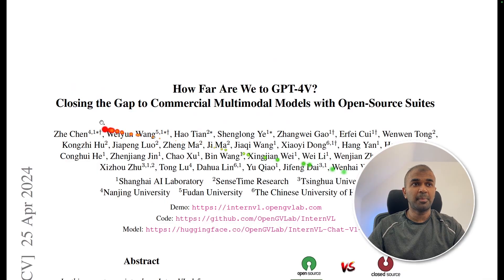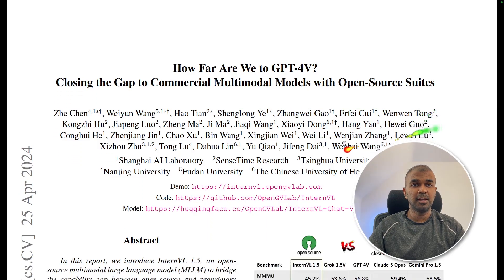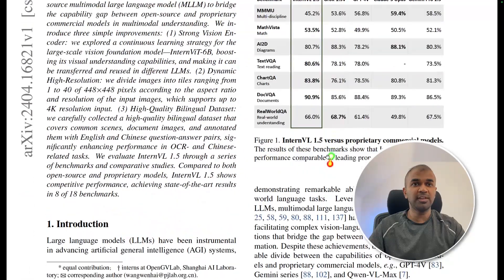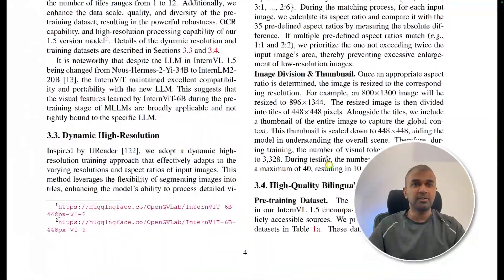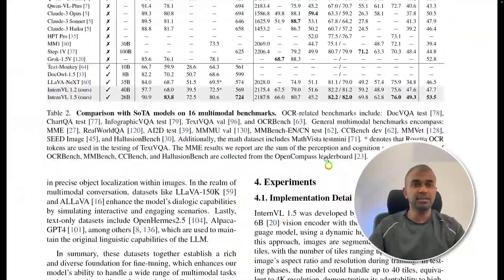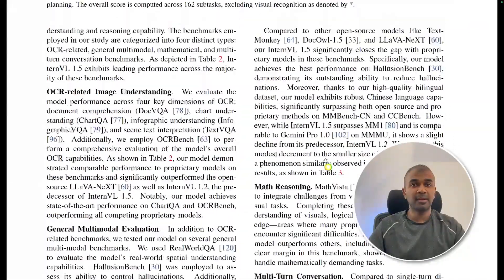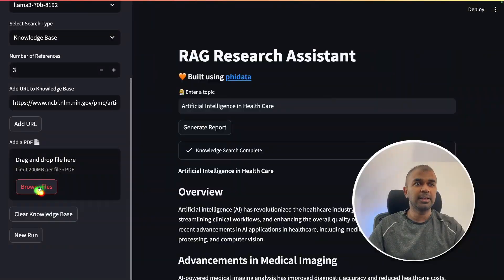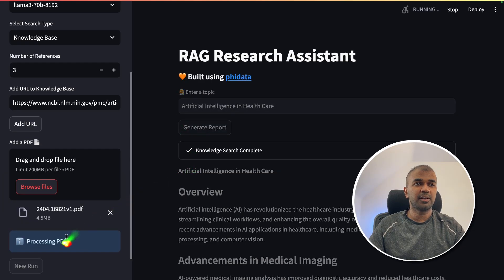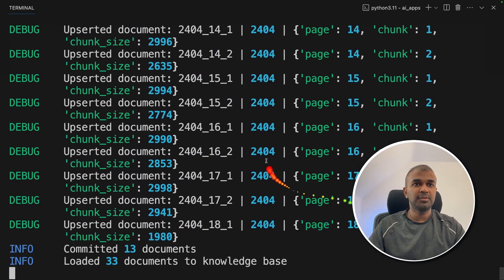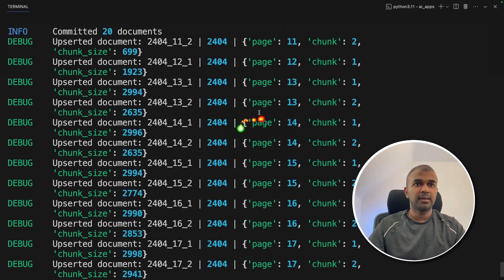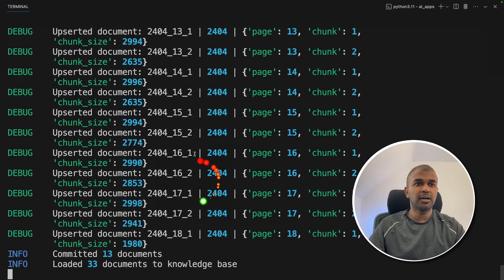Next we have a research paper about closing the gap to commercial multimodal models with open-source suites. I'm going to feed this PDF data, which contains a lot of information, and then ask questions based on it. After clicking Browse Files and uploading the file, it processes the PDF — dividing it into chunks, converting to embeddings, and storing in the knowledge base.